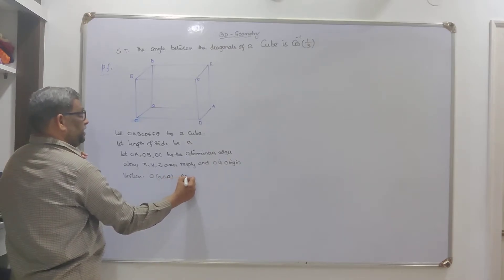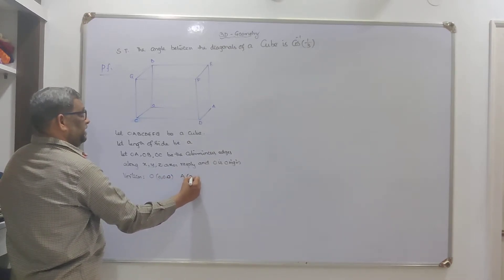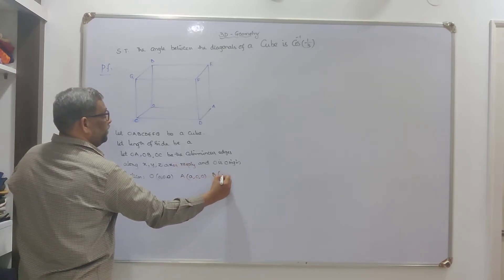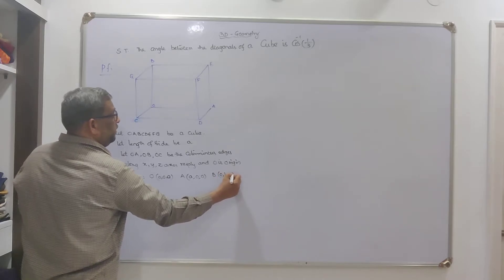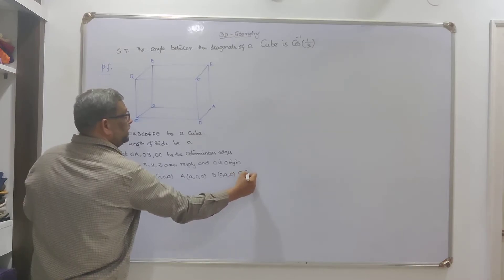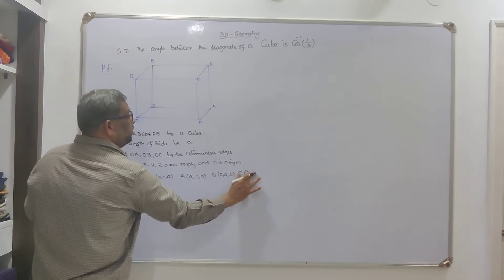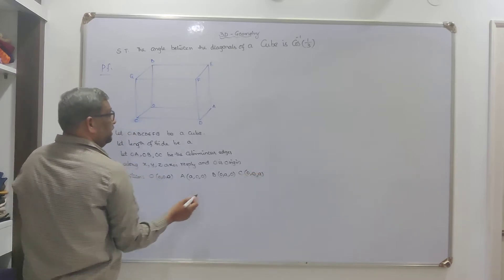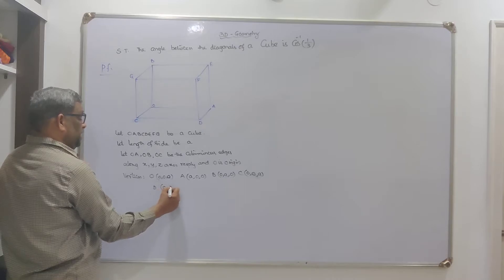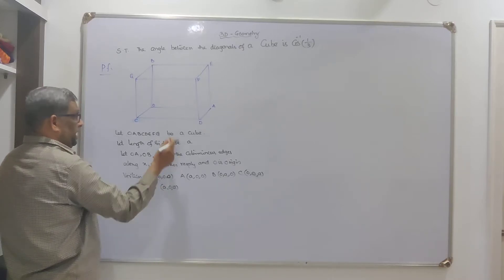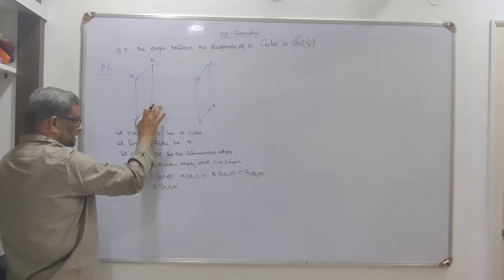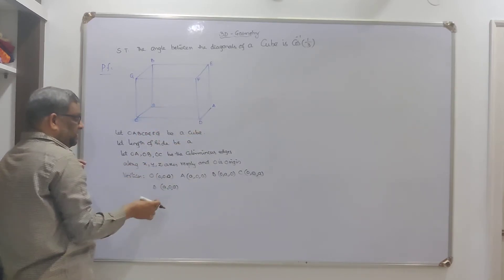A being on the x-axis: coordinates (a, 0, 0). B being on the y-axis: coordinates (0, a, 0). C: (0, 0, a). D is (a, 0, a) — this is in the x-z plane, so y is 0.